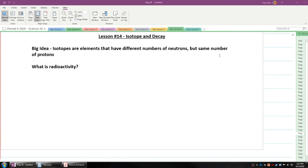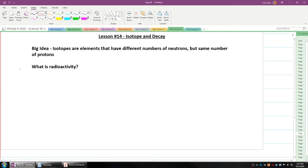Hey everybody, we're going to talk about lesson number 14, isotopes and decay. Now the big idea in this is that isotopes are elements that have different numbers of neutrons but the same number of protons. We're going to get back into that in a bit, but first of all, we're going to talk about radioactivity.